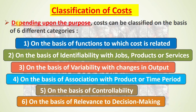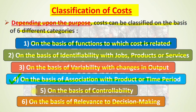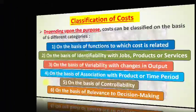As discussed in the previous video, we divide cost into six categories for the purpose of accounting. First: on the basis of functions. Second: identifiability with jobs, products or services. Third: variability with changes in output. Fourth: association with product or time period. Fifth: controllability. Sixth: relevance to decision making. We discussed the first three in Part 1. In this part we will cover classifications four, five, and six.